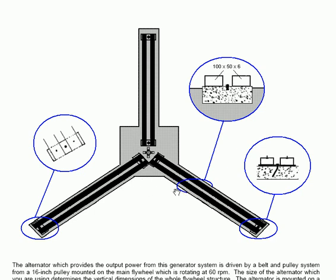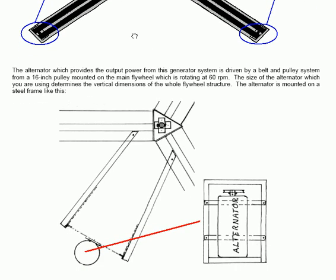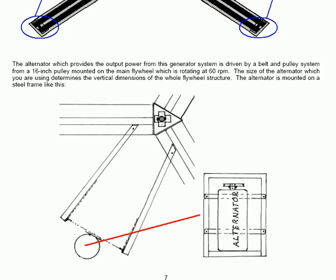The alternator which provides the output power from this generator system is driven by a belt and pulley system from the 16 inch pulley mounted on the main flywheel which is rotating at 60 RPM. The size of the alternator which you are using determines the vertical dimensions of the whole flywheel structure. The alternator is mounted on a steel frame like this as shown here in this diagram.